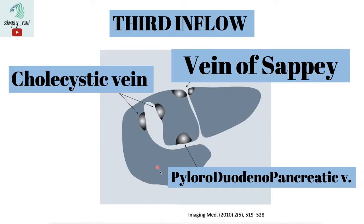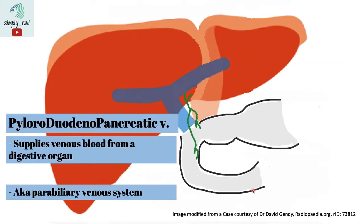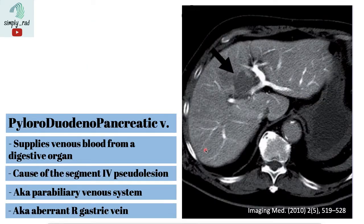Aside from the cholecystic vein, we also have the pyloroduodenal pancreatic vein. Because this vein courses in the region of the hepatoduodenal ligament, which also contains the common bile duct, it is part of the parabiliary venous system. This third inflow brings venous blood from the pylorus, duodenum, and pancreas, and causes potential hypo-enhancement in segment 4 — another typical area of third inflow pseudolesion.